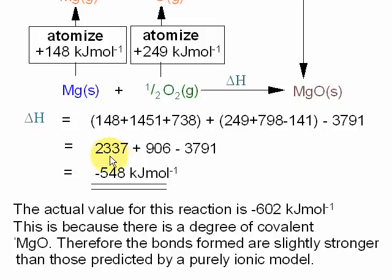The calculation gives an overall negative enthalpy change, as you'd expect. It's worth noting that the actual value for this reaction is slightly more exothermic: minus 602 kJ per mole. This is because there is a degree of covalent character in magnesium oxide, and therefore the bonds formed are slightly stronger than those predicted by a purely ionic model. Born-Haber is a purely ionic model.